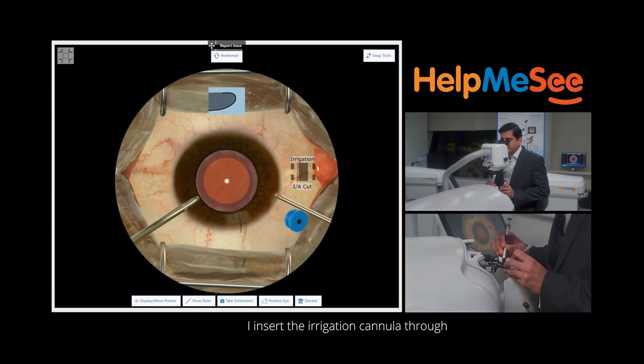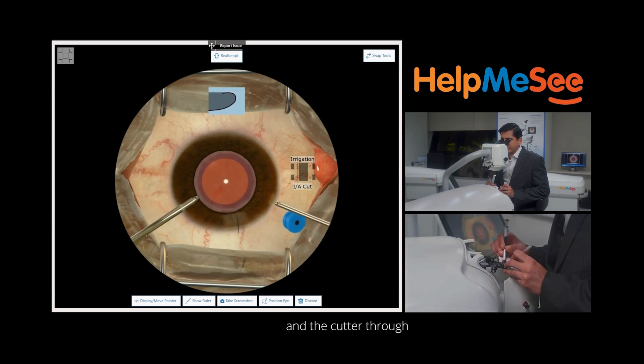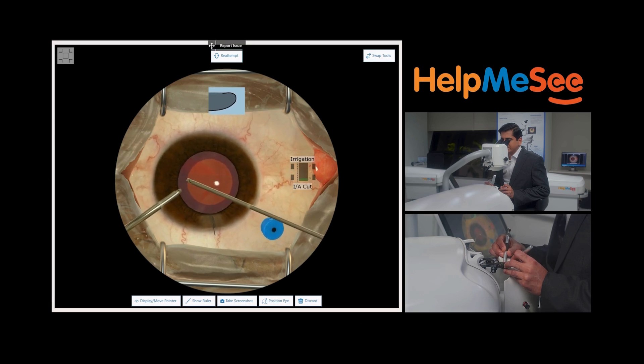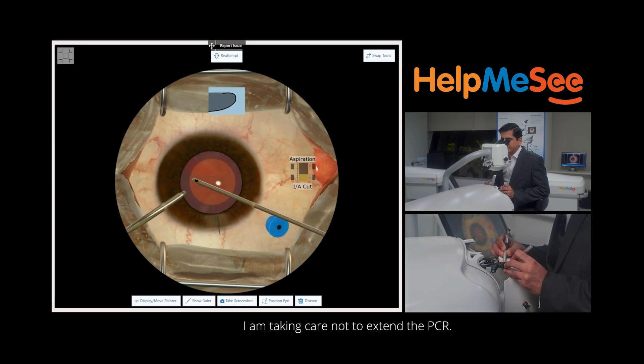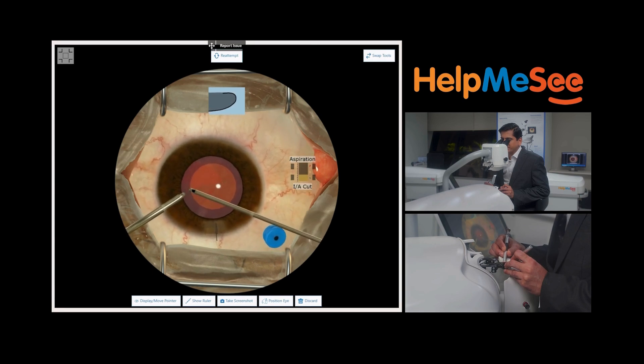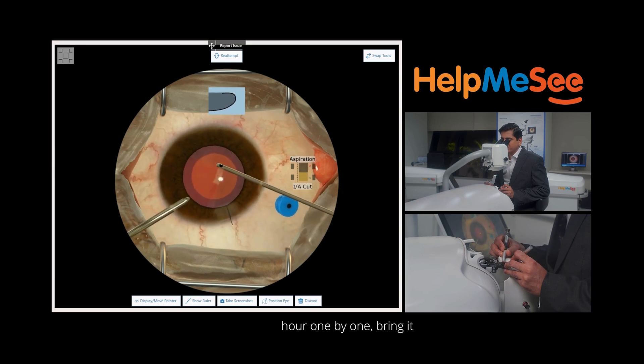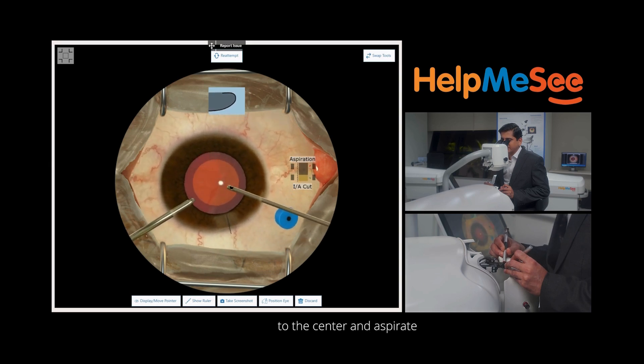I insert the irrigation cannula through the left parasynthesis and the cutter through the right parasynthesis. I press the foot pedal and slowly start engaging the cortex, bring it to the center and aspirate more. I remove the cortex clock hour by clock hour one by one, bring it to the center and aspirate more.